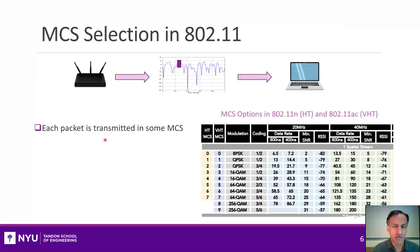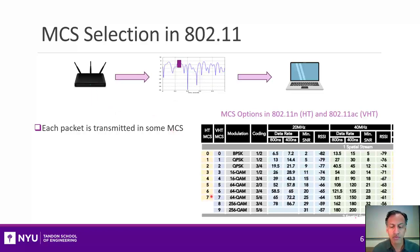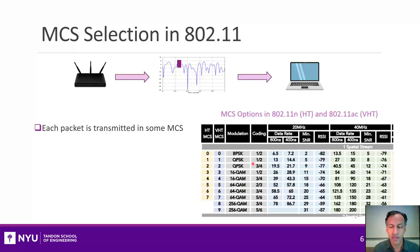So how does MCS selection work in 802.11? Imagine that you have an 802.11 wireless access point, and it is transmitting to your laptop over some kind of fading channel, which is varying in SNR. That access point has a number of MCS options to select from, typically around eight for one stream, but it changes a little bit for different versions of the protocol. Each MCS corresponds to some modulation, which is usually QPSK to 64-QAM, and some code rate.